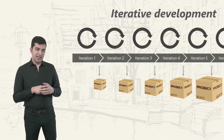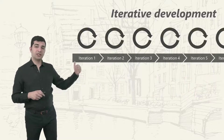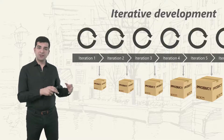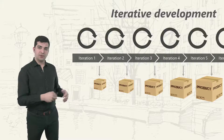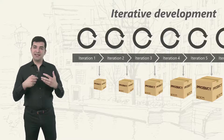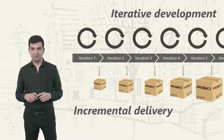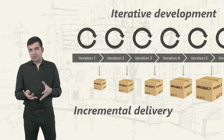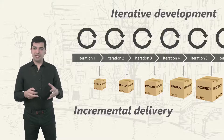There's another phrase that many people confuse with iterative development — the fact that we are creating the product in multiple versions. The first version has only a few features; in the next one we add a few more, and we keep adding more and more. The product gets bigger and more valuable. We are delivering the product in multiple increments — this is called incremental delivery. It's a different concept from iterative development, though they usually come together.